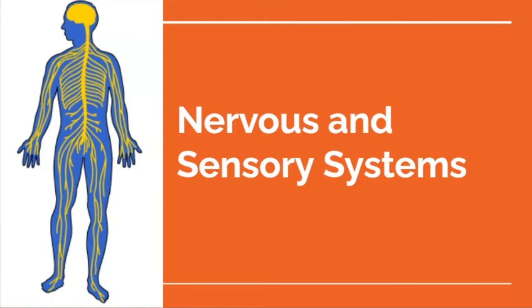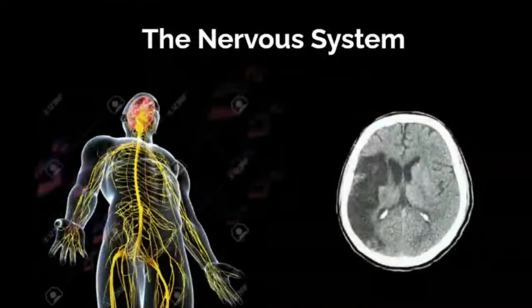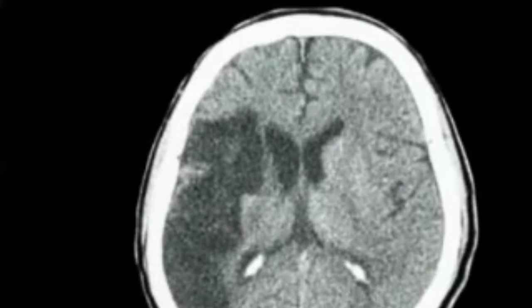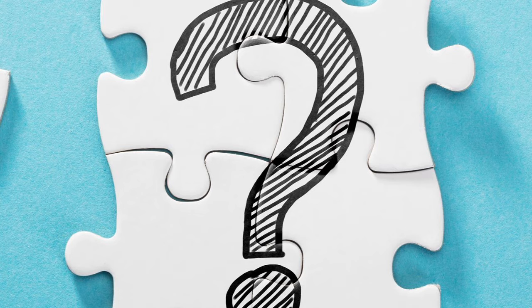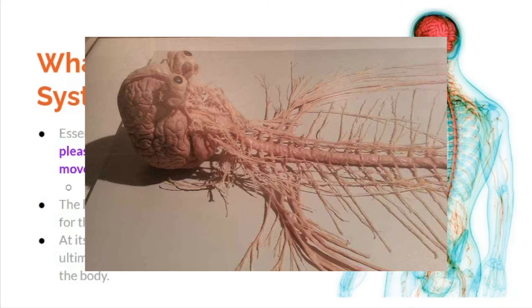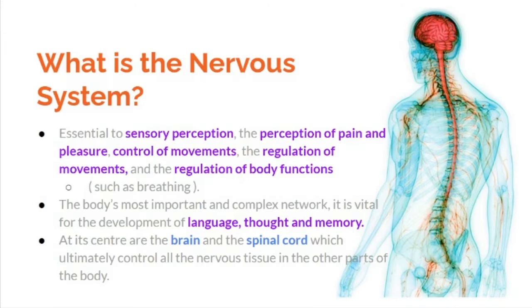We will be discussing the nervous and sensory system. The nervous system is essential to sensory perception, the perception of pain and pleasure, control of movements, regulation of body functions such as breathing. It is the body's most important and complex network, vital for the development of language, thought, and memory. Its center is the brain and spinal cord, which ultimately control all nervous tissue in other parts of the body.